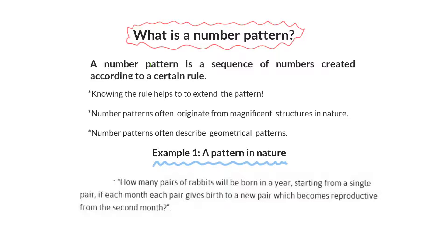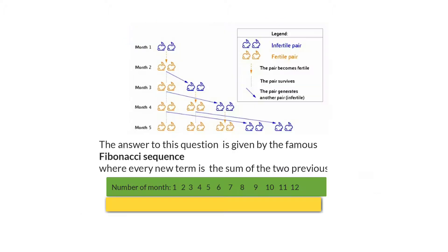Our first example is a pattern in nature — it's a well-known one, perhaps you've already heard it. The question is: how many pairs of rabbits will be born in a year starting from a single pair, if each month each pair gives birth to a new pair which becomes reproductive from the second month? Let's represent this question with a diagram.